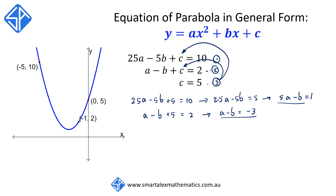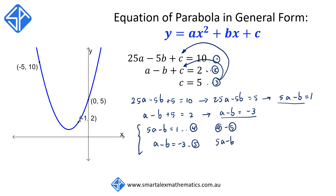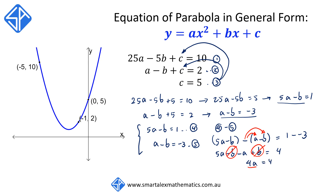We now have two equations in terms of a and b. I'm going to call 5a minus b is equal to 1 equation 4, and a minus b is equal to negative 3 equation 5. Using the elimination method, we're going to do equation 4 take away equation 5. This gives 5a minus b minus (a minus b) is equal to 1 minus negative 3. Remember to expand the negative sign: 5a minus b minus a plus b is equal to 4. The negative b and positive b cancel out, simplifying to 4a is equal to 4. Dividing both sides by 4, we get a is equal to 1.